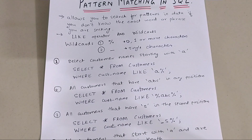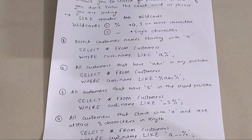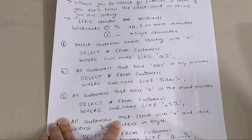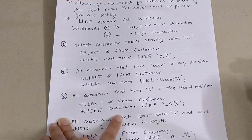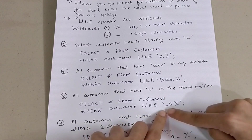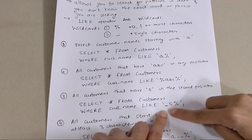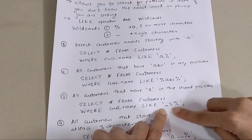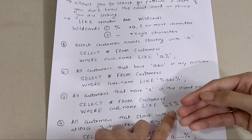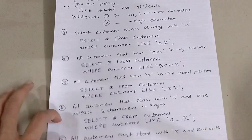The third question: all customers that have S in the second position. We do not know what the first letter of the name is going to be, so we use underscore. The query is SELECT * FROM customers WHERE customer_name LIKE '_S%'. The underscore means exactly one character of any letter in the first position, then S is in the second position, and percentage means anything can follow.